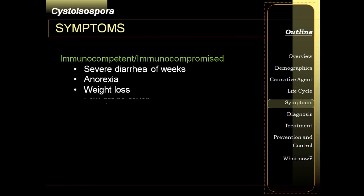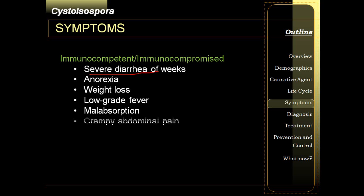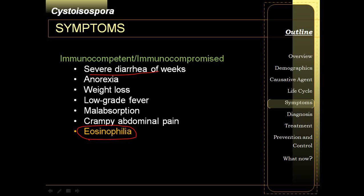The symptoms include severe watery diarrhea in both immunocompetent and immunocompromised individuals. However, it is more severe in immunocompromised patients. Eosinophilia is actually the hallmark of Cystoisospora infection when comparing among the three — it is a distinguishing attribute of Cystoisospora compared with Cryptosporidium and Cyclospora.